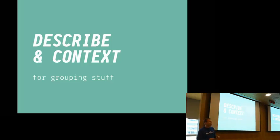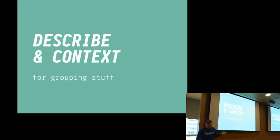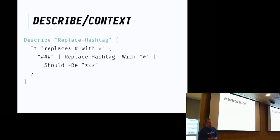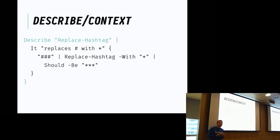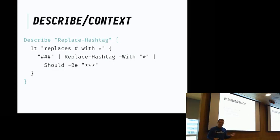Then we have 'describe' and 'context'. I personally cannot remember when I used context the last time, but in Pester 4 they are the same function — they just have different names for historical reasons. We use them to group stuff together. If you are describing a single function, you put it into a describe block, and then you put the different 'it' blocks inside of it. It also manages your mocks and your test drive in the background. Just remember: put it into the describe block. If you don't, it will throw an exception and tell you that you have to.